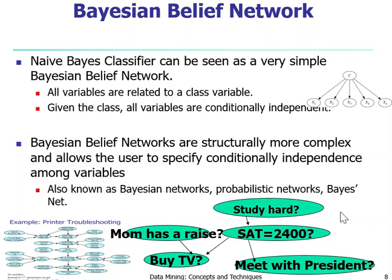In a graph like this, if we know those conditional probability distributions, we will be able to infer — given a student studies hard — what's the chance for the student to meet with the president. We can also infer if the student met with the president, what's the chance that he has studied hard. We could also infer if we buy a TV, what's the influence between the mother's salary change and the student's SAT score. A Bayesian belief network allows us to make many kinds of inferences.